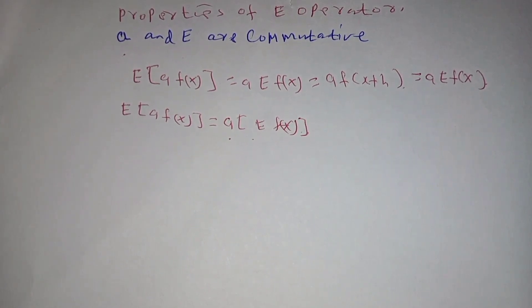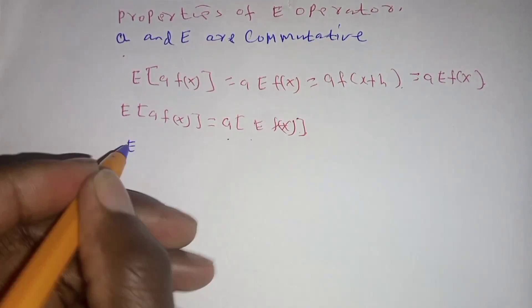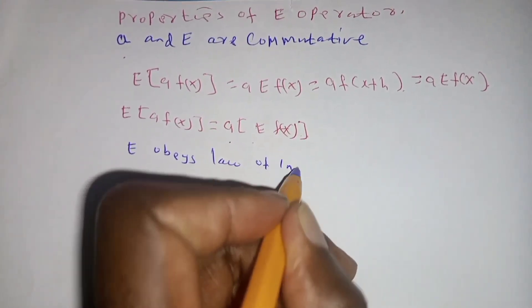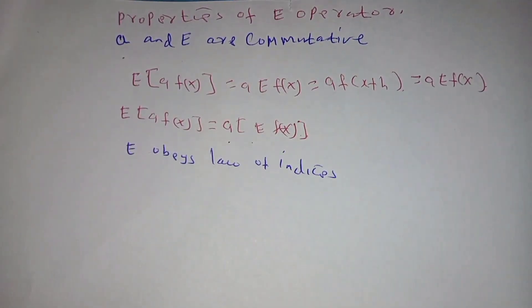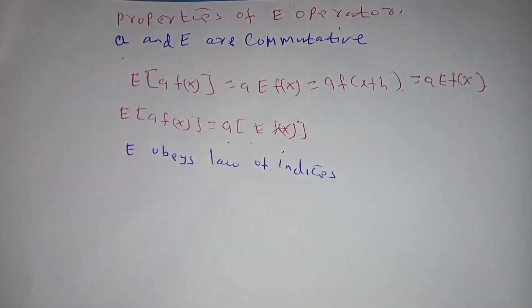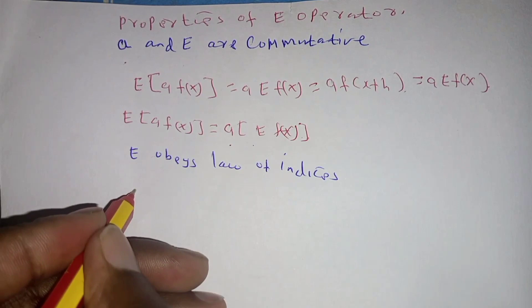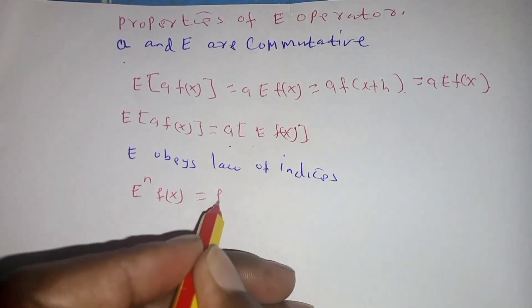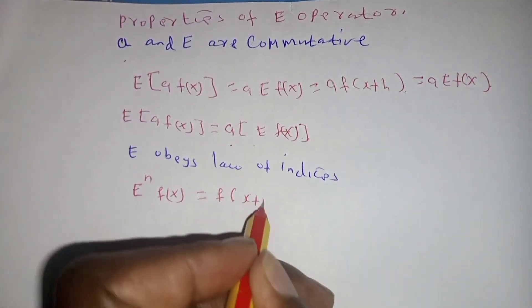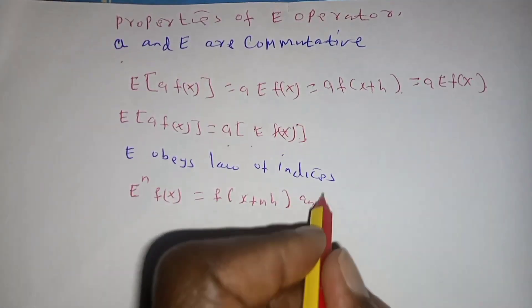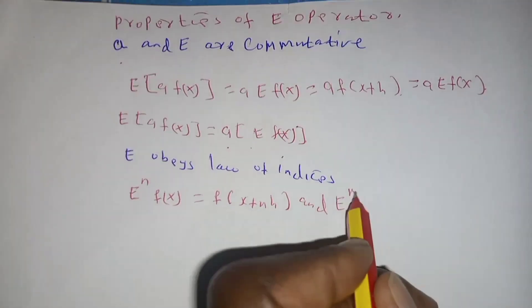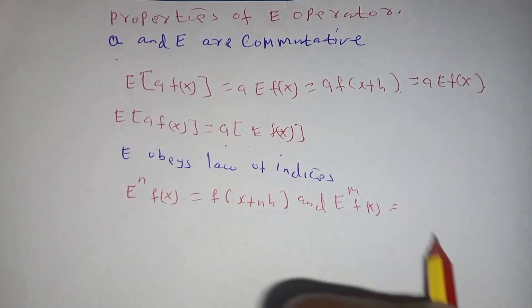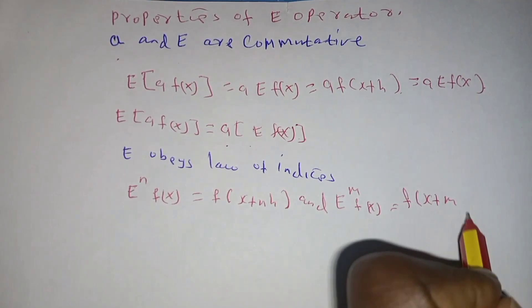Number two, E obeys laws of indices. We want to prove the power law of indices, whereby we have E power n of f of x being equivalent to f of x plus nh. And at the same time, E power m of f of x will be equal to f of x plus mh.